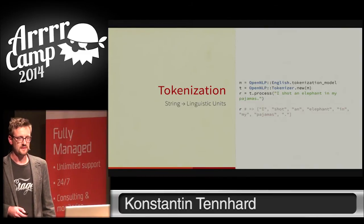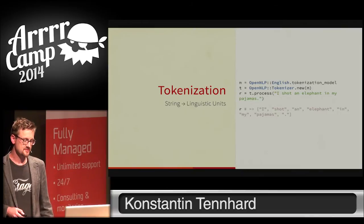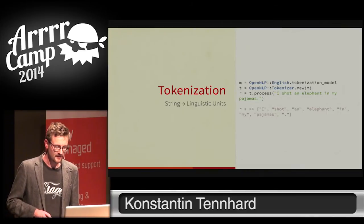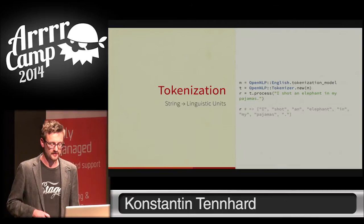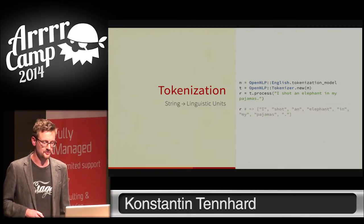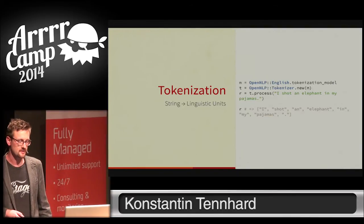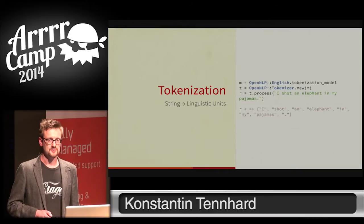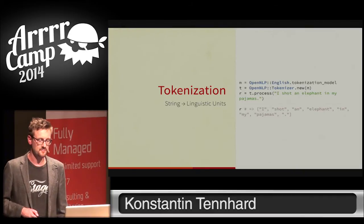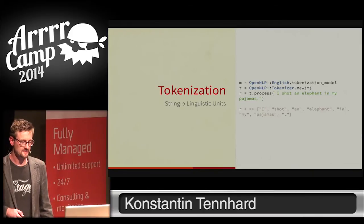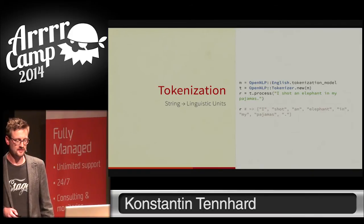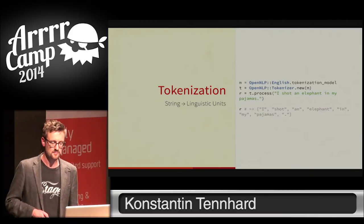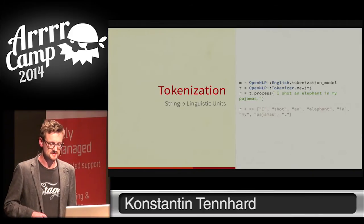OpenNLP makes tokenization quite trivial. Just like with sentence detection, we load the tokenization model for English, initialize the tokenizer, and call the process method. In this case, we get back an array — but the array won't contain entire sentences, but tokens instead.